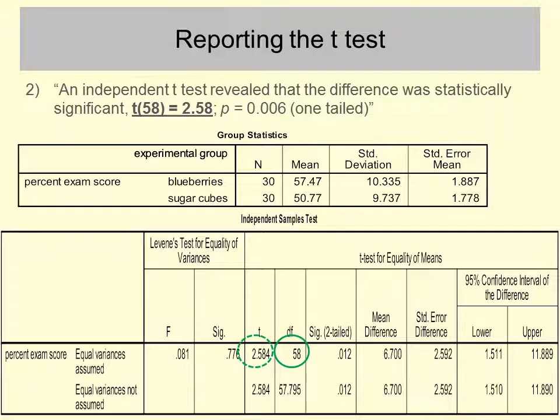We write that an independent samples t-test revealed that the difference was statistically significant, with t(58) = 2.58, p = 0.006, one-tailed. The dashed green line in the table highlights where the t-statistic is reported by SPSS. The solid green circle highlights the degrees of freedom, which always go in brackets after the letter t. This will be the same for other statistics you will learn about later, such as R. You always have the degrees of freedom associated with the calculation in brackets.